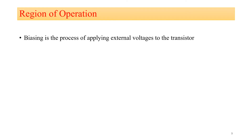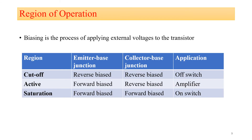Which are the different regions of operation of transistors? Biasing is the process of applying external voltages to the transistor. When you apply external voltages, the transistor mainly works in three regions: cutoff region, active region, and saturation region. In the cutoff region, both junctions — base-emitter junction and collector-base junction — are in reverse bias condition, and the transistor can be used as an off switch.